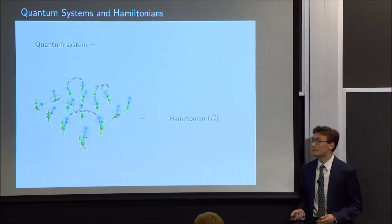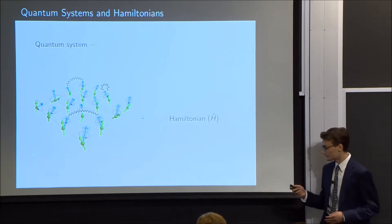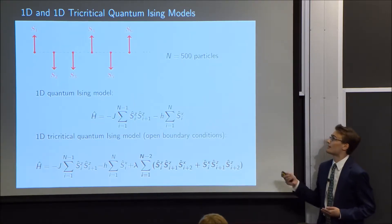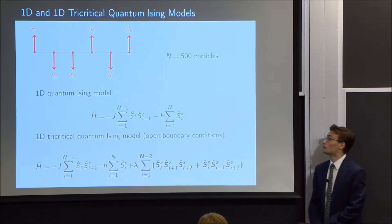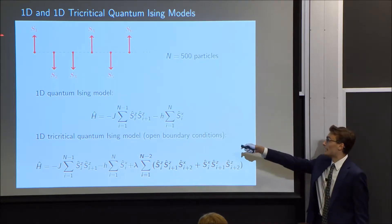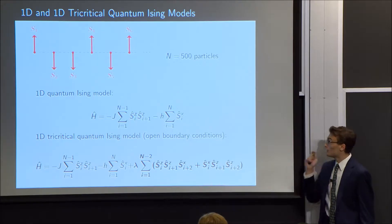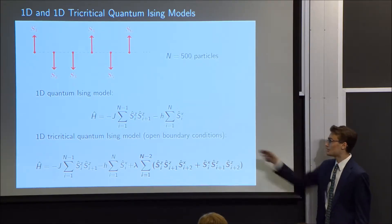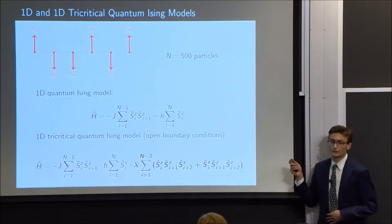One property of the Hamiltonian is that as we add more particles to our quantum system, its size increases, which has consequences I'll get to later. The particular systems we studied are the 1D tricritical quantum Ising model, but first I want to introduce just the 1D quantum Ising model. Both of these models are just a line of 500 particles, in particular spin-1/2 particles. The 1D quantum Ising model has a Hamiltonian that takes into account the interactions between adjacent spin states and particles with their environment.